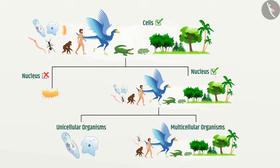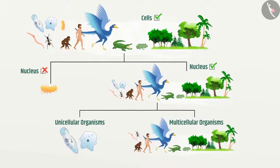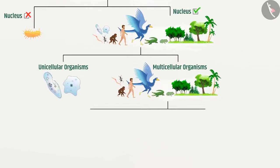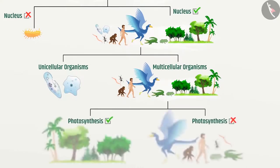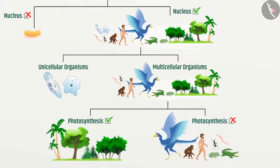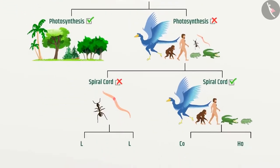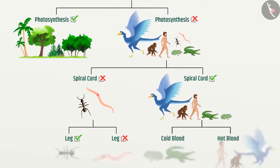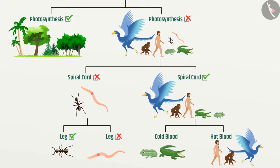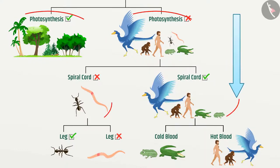At the next level, we can classify multicellular organisms based on their ability to do photosynthesis. Then we can take body structure into consideration at the next level. Thus, here you can see the development of a hierarchy where similar organisms are placed in a group.